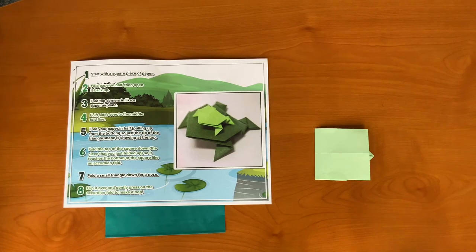Step six, fold the top of the square down, the piece that you just folded up, so it touches the bottom of the square like an accordion.